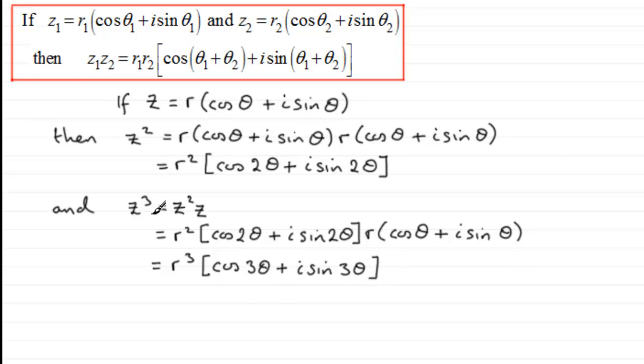Now if we were to work out Z to the power of 4, it would be Z³ times another Z. And by following a similar pattern to this, it turns out that Z to the power of 4 is equal to R to the power of 4, cos 4θ plus i sin 4θ.